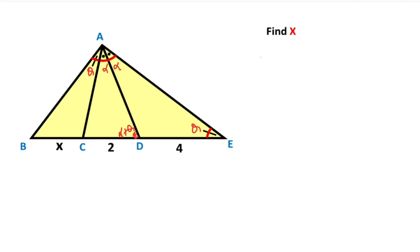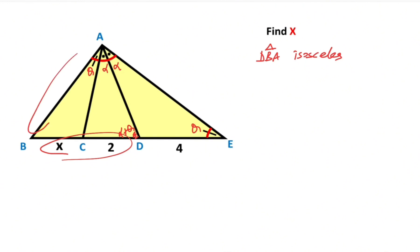After that, if you focus on triangle BAD, notice that this triangle has become an isosceles triangle. So triangle DBA is an isosceles triangle. Therefore, if here is X plus two, that means this length is also X plus two.